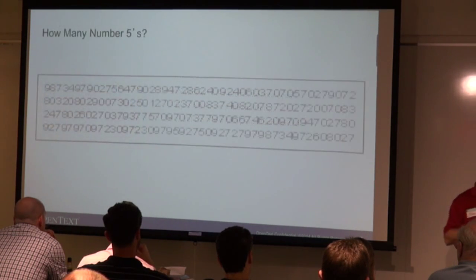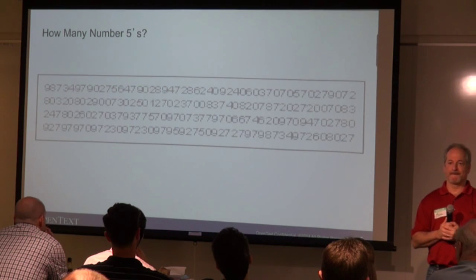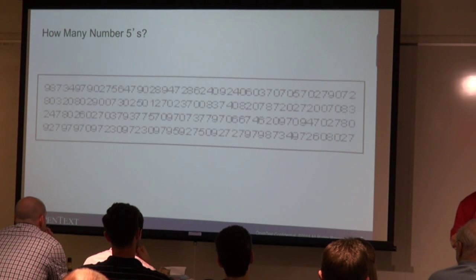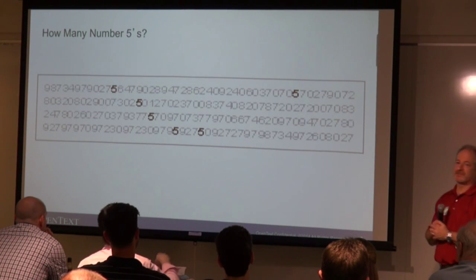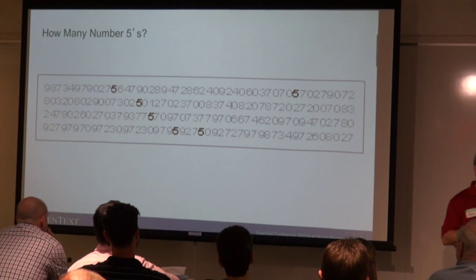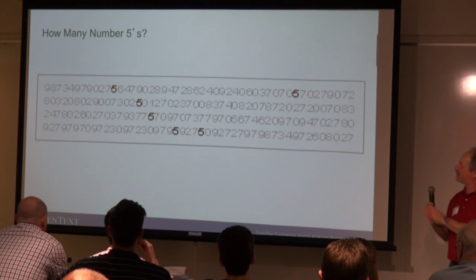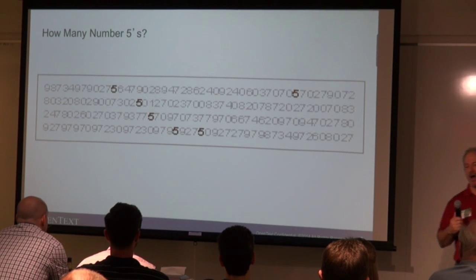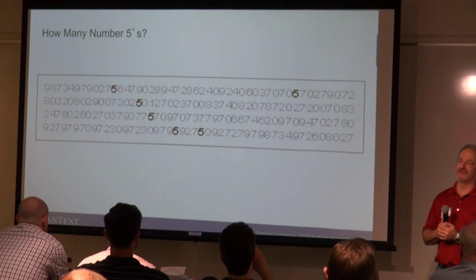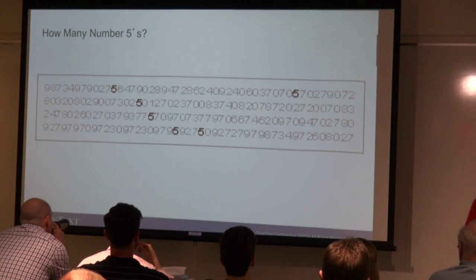Can somebody tell me how many number fives are here? How about now? There are actually seven — there's one in the title but we won't count that one. So why was it easier to see them the second way? The reason is because our mind perceives shades better than it perceives shapes. That's just the way our brains work.